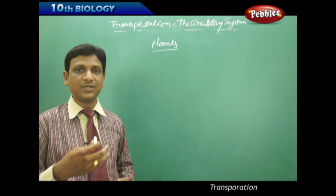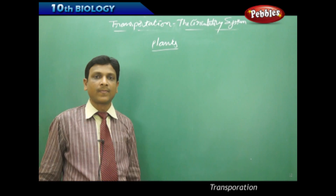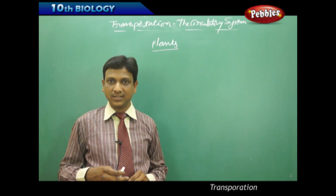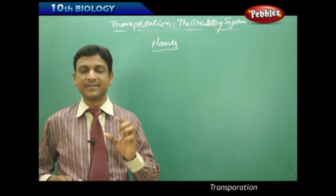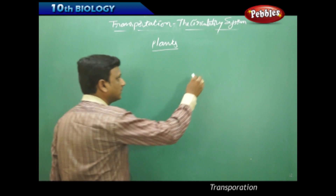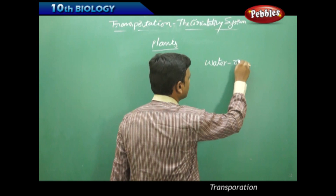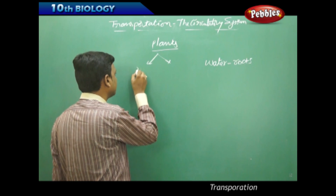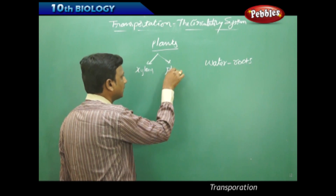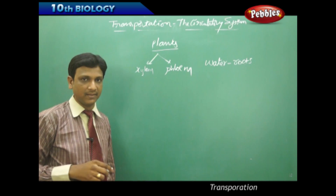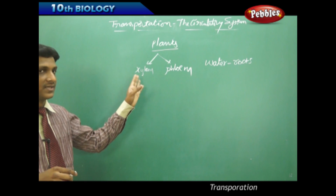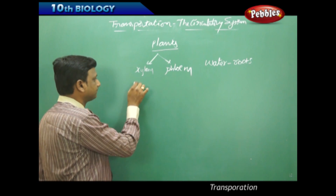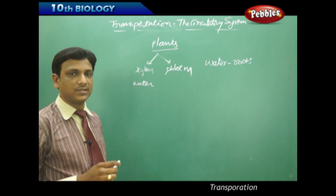Now let us see what mechanisms are involved in transport in plants. In previous classes you studied Van Helmont's experiments on plants, by which he proved that plants absorb water from the soil through their roots. Plants basically have two different kinds of tissues for the transport of materials: one is xylem and the other is phloem. Xylem is a tissue that participates in the transportation or conduction of water to different parts.